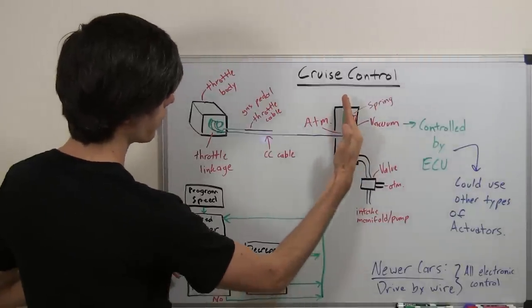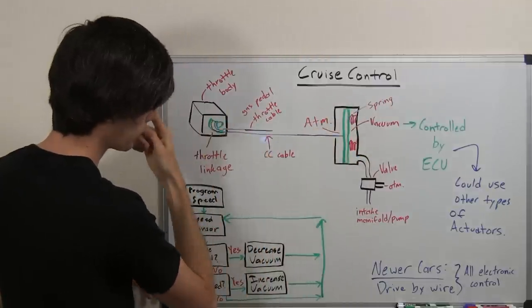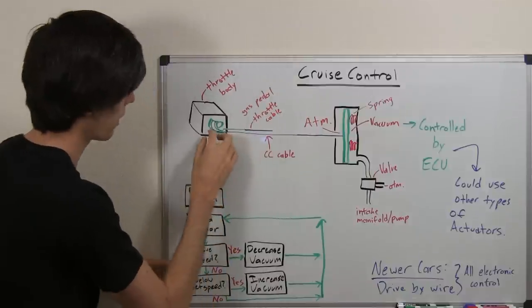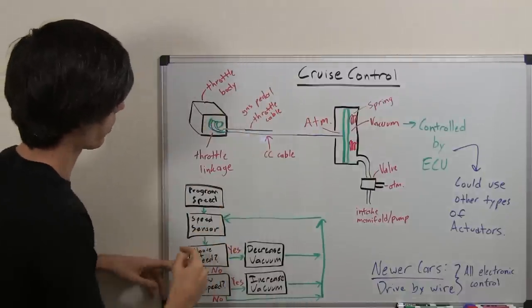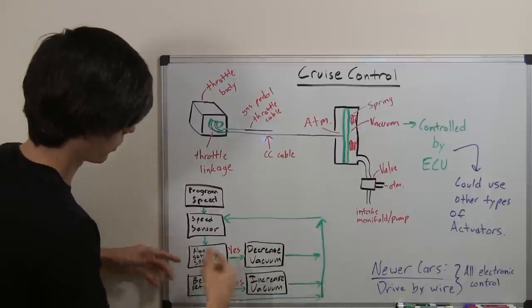By decreasing the vacuum in here, this throttle cable is going to move to the left and that's going to release, it's going to lower the amount of opening of this throttle body. So you're going to have less air coming in, less fuel, so you'll slow down.